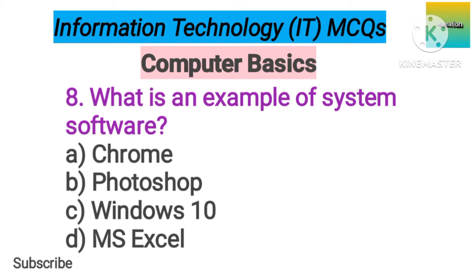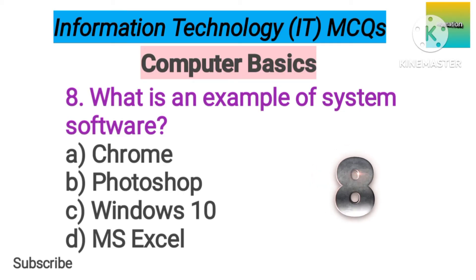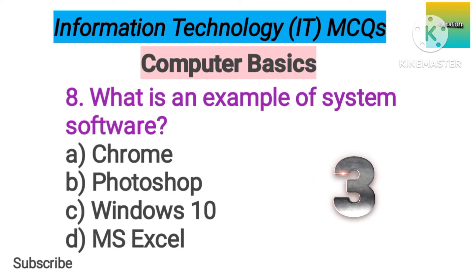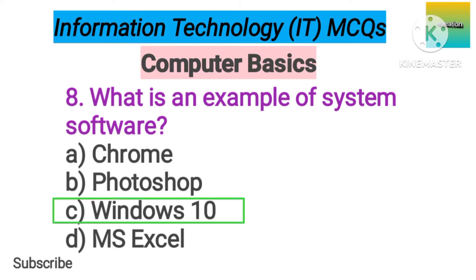Number 8. What is an example of system software? Option A: Chrome. B: Photoshop. C: Windows 10. D: MS Excel. The correct answer is option C, Windows 10.